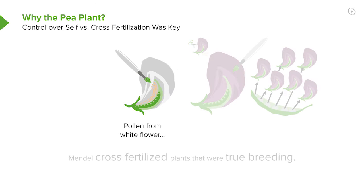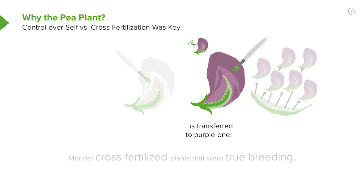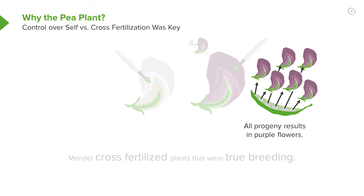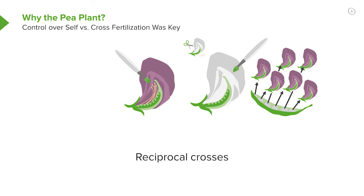So he would take the pollen from the white plant and paint it onto the carpels of the purple plant, which had had its anthers removed. And he would look at the progeny — in this case, they all came out looking like the purple flowers. Mendel could also perform reciprocal crosses. Reciprocal simply means doing it the other way around, taking pollen from a purple flower and applying it to a white flower that had had its anthers removed. And he noticed he had the same outcomes.